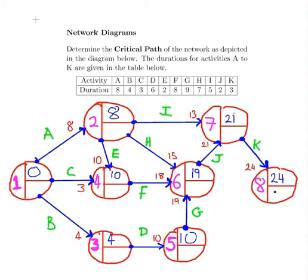The latest finish for node eight is also twenty-four. For the last node, the earliest finish and the latest finish should be the same. Now we're going to work back to find the latest finish for each of those nodes, and then we can determine the critical path from that.